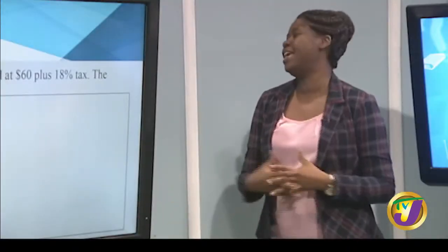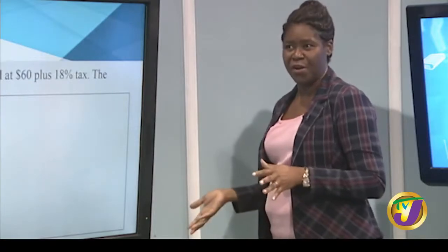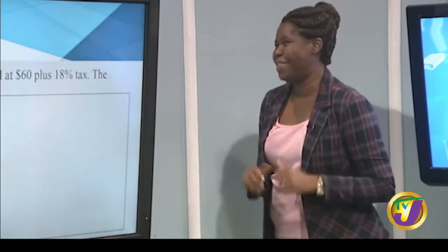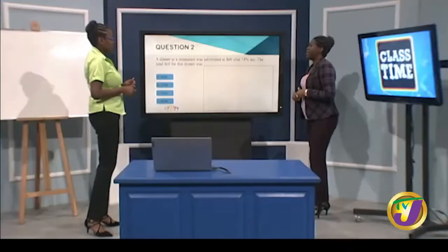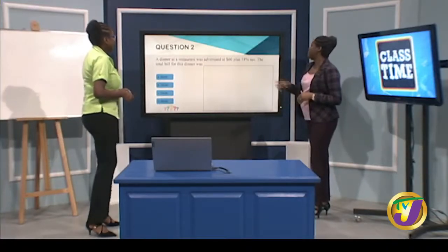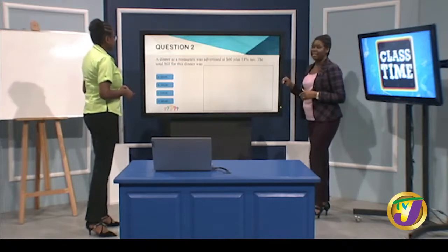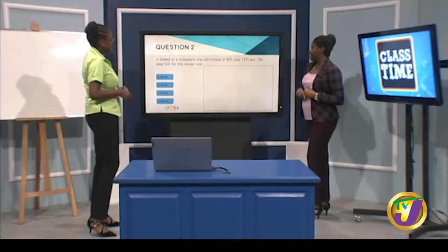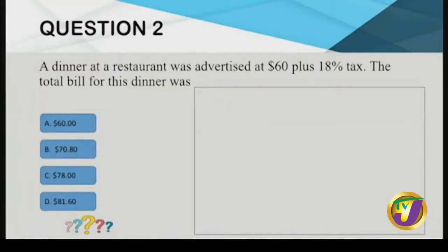Stores generally charge consumption tax — in our country it is currently around 16.5%. At this restaurant the tax is 18%. Because it's a plus, the answer must be more than $60, so we can eliminate option A. We now have three options remaining.